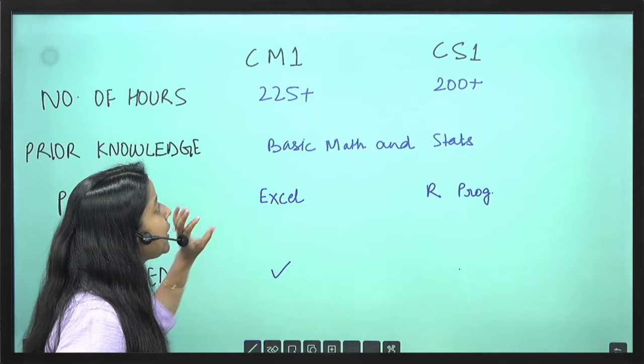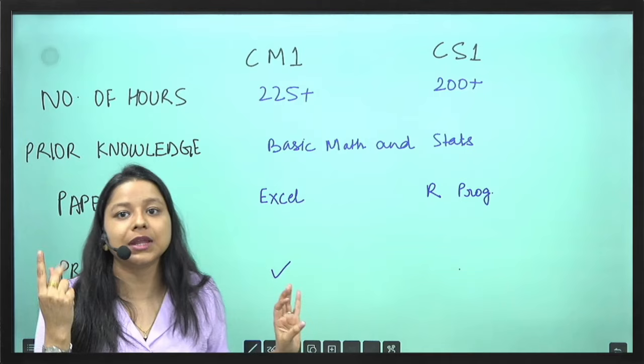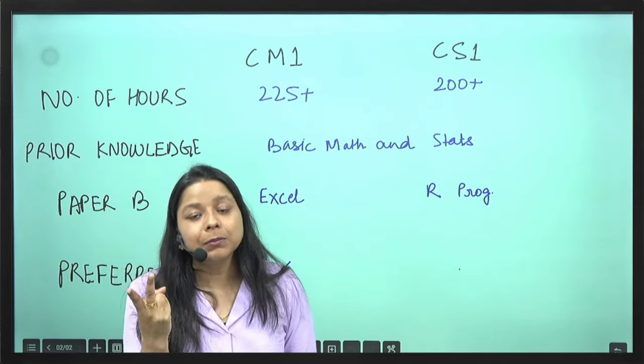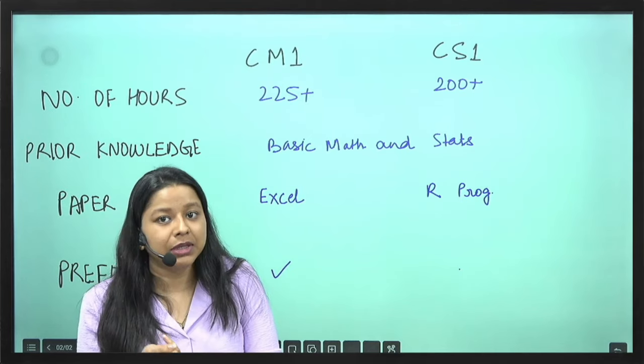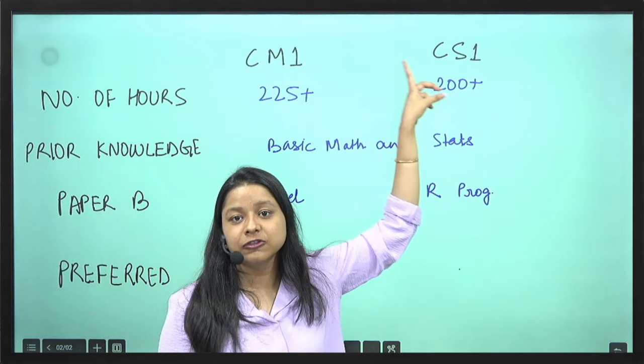For paper B, for CM1 we have Excel based examination. So there are two papers, paper A and paper B. Paper A is 100 marks theory paper for both. Paper B will be a computer based examination which has Excel for CM1 and R programming for CS1.